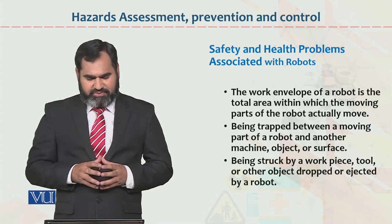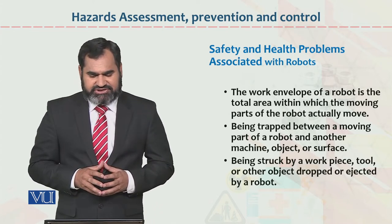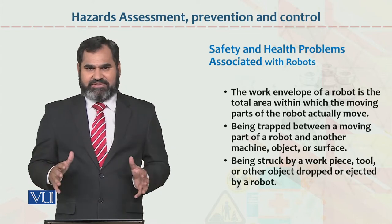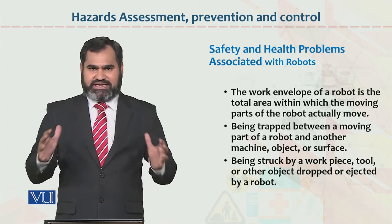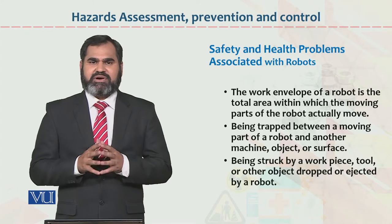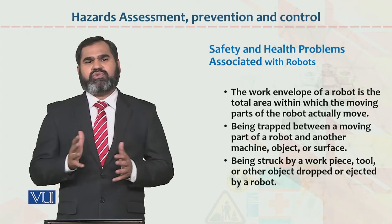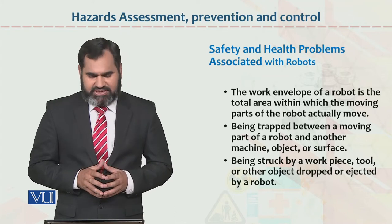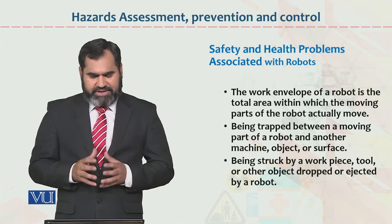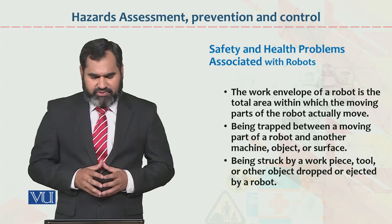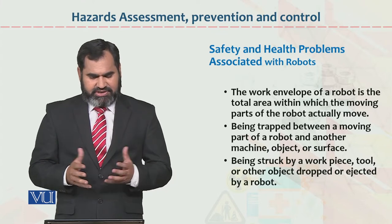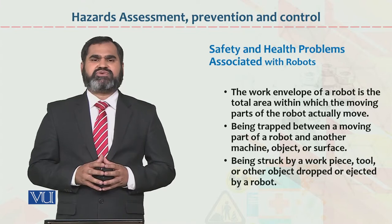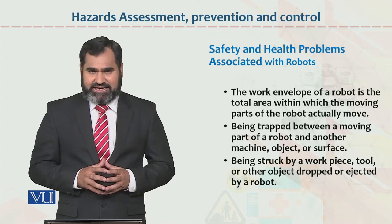The work envelope of a robot is the total area within which the moving parts of the robot actually move. Total envelope ka yahan matlab hai ki total area jis ko robots ne cover karna hai, us ki command us ke andar honi chahiye. Or us ke movements hain right, left, straight, backward — yeh saari instructions us ke andar feed honi chahiyen. Being trapped between a moving part of the robot, another machine, object or surface, or being struck by the work piece.